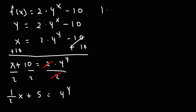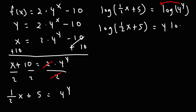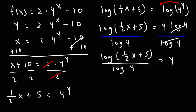Now we can take the log of both sides. So I'm going to have log(1 half x plus 5) is equal to log of 4 raised to the y. Using the property of logs, we can move the y variable to the front, giving us y times log 4. We need to divide both sides by log 4 to get y by itself. We could simplify using the change of base formula, rewriting this as log base 4 of (1 half x plus 5) equals y.